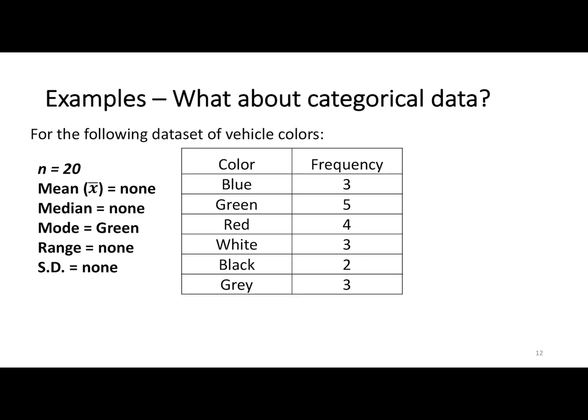To summarize: if you have quantitative data, you can find all those things. With qualitative or categorical data, the only thing you can find is the count and the mode. Always pay attention - when you look at a data set, whether they give you a frequency table or a list, identify the type of data first, then make a decision about what you can and cannot do with that particular data set.